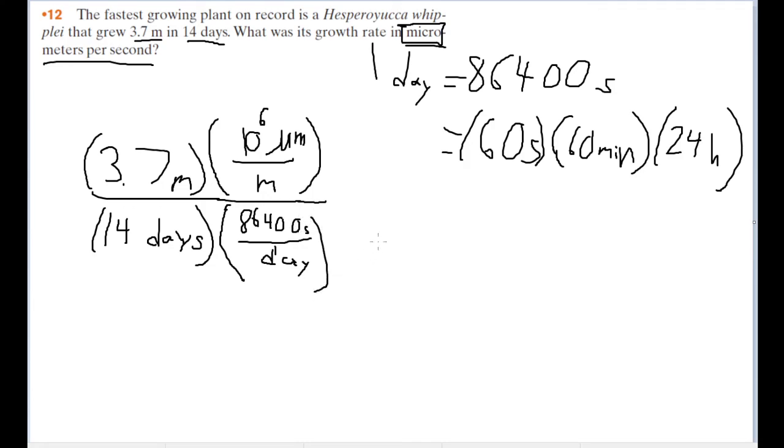Now let's plug this whole thing into a calculator to find the growth rate. The answer we get is 3.1 microns per second.